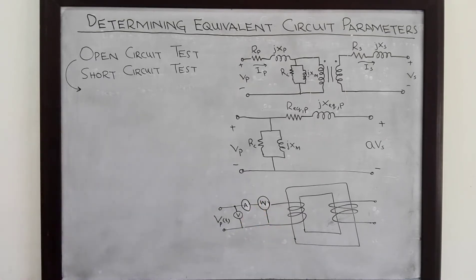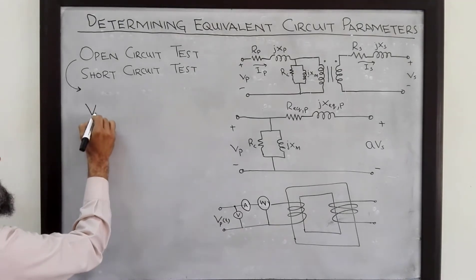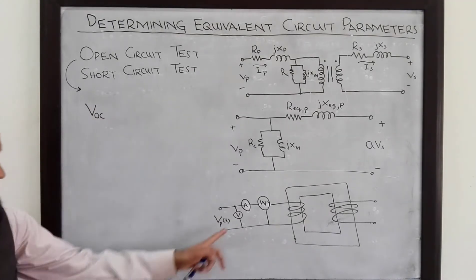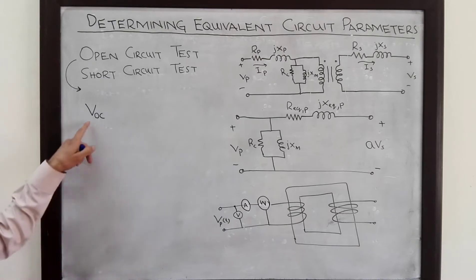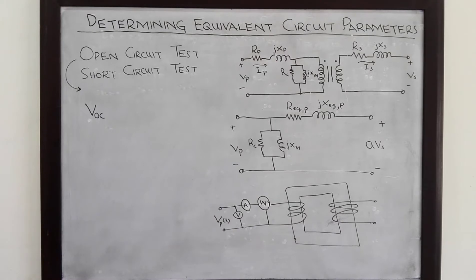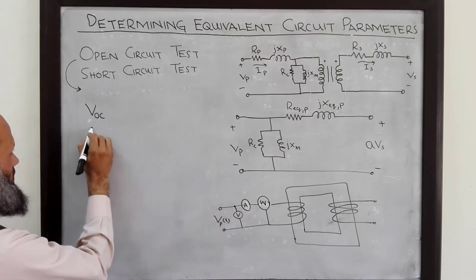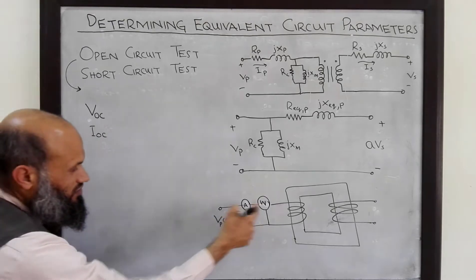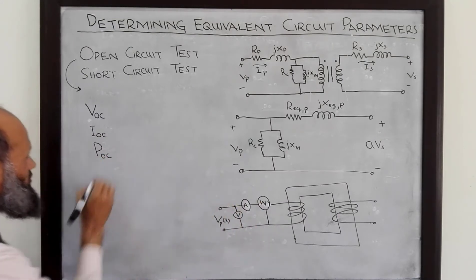We measure that power using a wattmeter. We call the voltage measured by the voltmeter V_open_circuit, and we call the current measured by the ammeter I_open_circuit. The power measured by the wattmeter is called P_open_circuit. Note that the voltmeter and ammeter can only measure magnitudes of voltages and currents, not the phase angles.